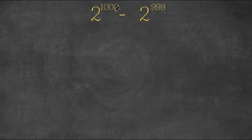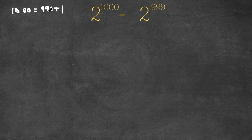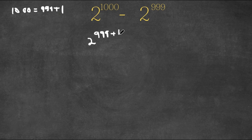So we have 2 to the power of 1000 minus 2 to the power of 999. Now, 1000 is equal to 999 plus 1. So I'm going to substitute 999 plus 1 in for 1000. So now we have 2 to the power of 999 plus 1 minus 2 to the power of 999.